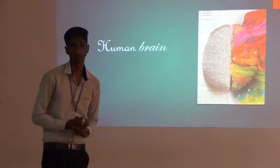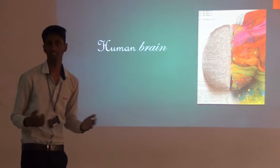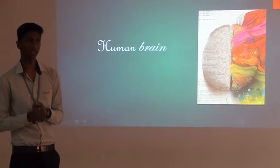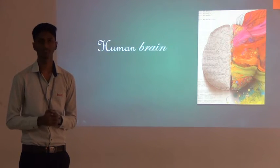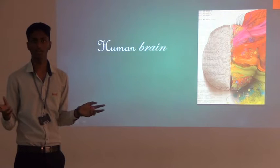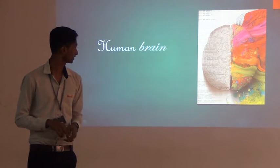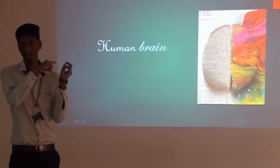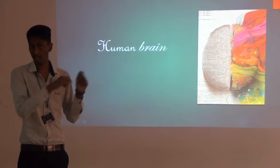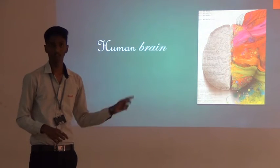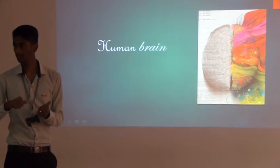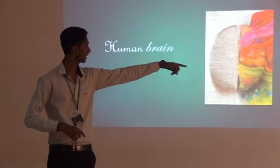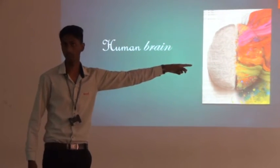Here is an interesting fact about our brain. When we are studying and we get any doubt in our subjects or academics, we may look up or think about it. At that time, our eyes automatically move to the left side, meaning our left side of the brain is working. And when thinking creatively, our eyes automatically move to the right side. The interesting fact is that the right side of the brain controls the left parts of the body, and the left side of the brain controls the right parts.